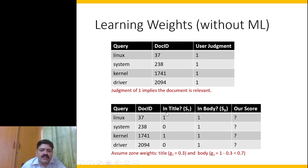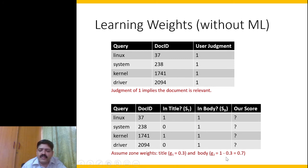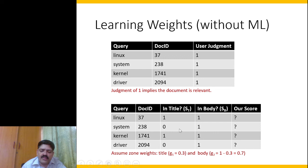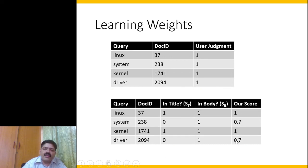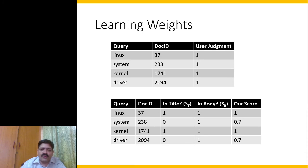From sₜ and sᵦ values, we can compute a zonal score — but first we need zonal weights. Let's say g is the title weight (e.g., g=0.3) and body weight is 1−g (e.g., 0.7). A document where both title and body contain the term gets a score of 0.3×1 + 0.7×1 = 1. Another document might score 0.7, and so on. We have our computed scores and the user judgments, so we can compute the error.